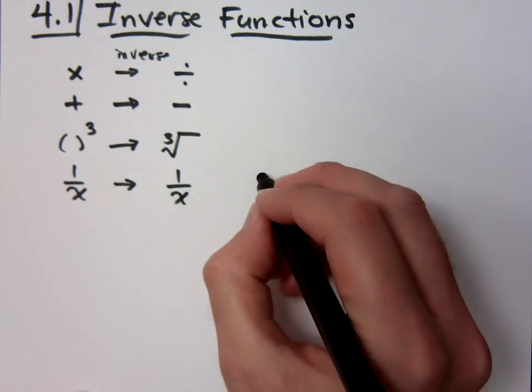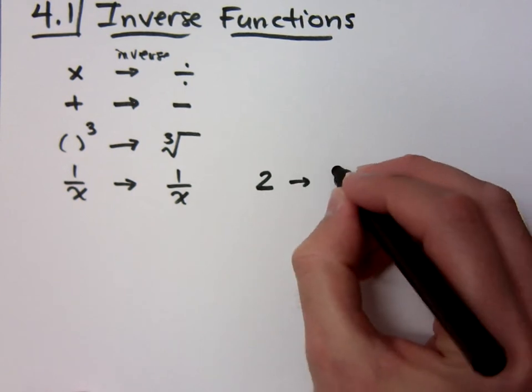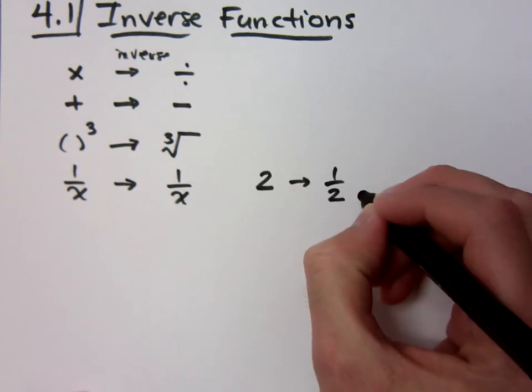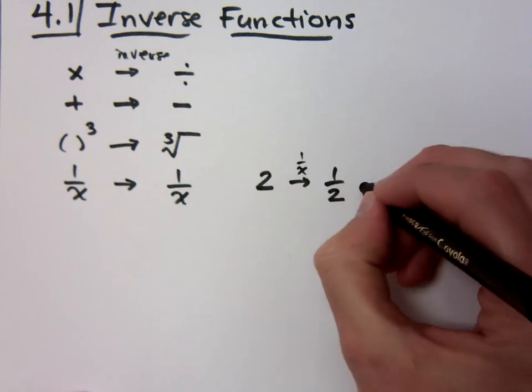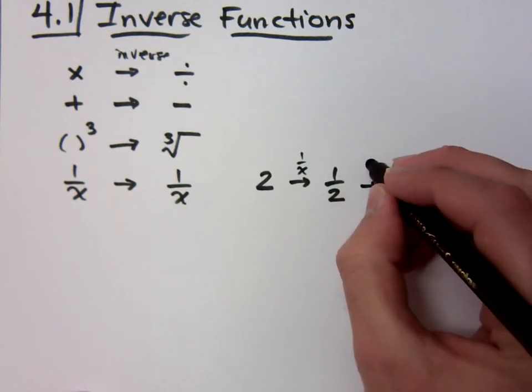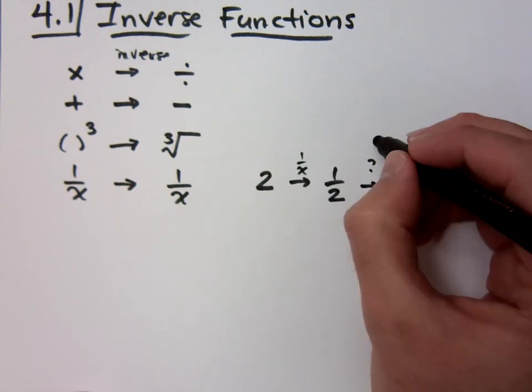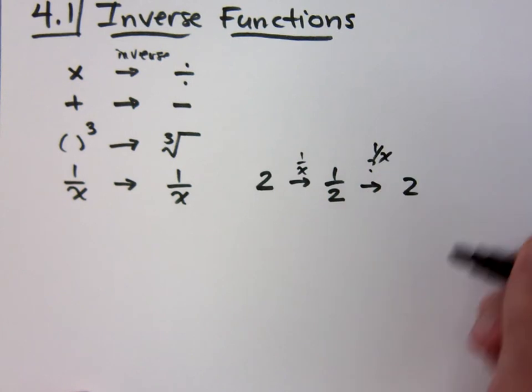For example, if I take 2 and I make it and I do the reciprocal, right? So this is by applying 1 over x. How do I get back to my original? What would I put here?